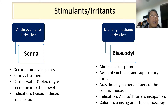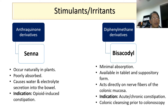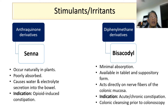Senna contains chemicals called sennosides. These sennosides irritate the lining of the bowel, which causes the laxative effect. It also causes water and electrolyte secretion in the bowel.